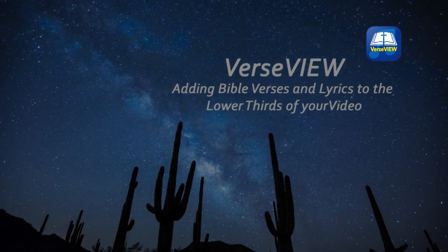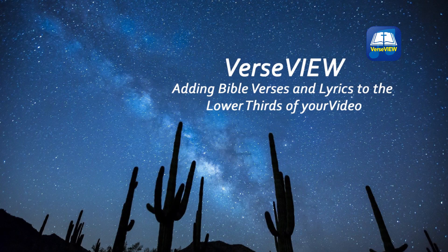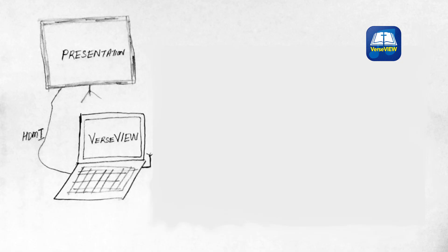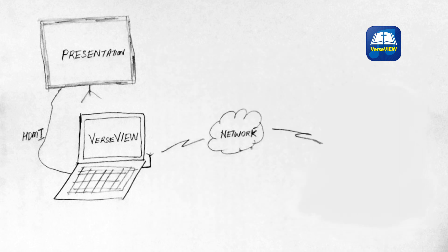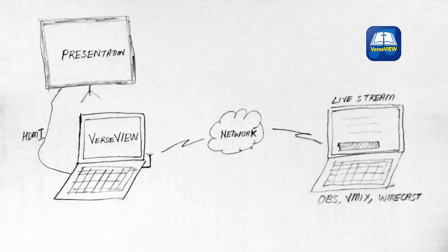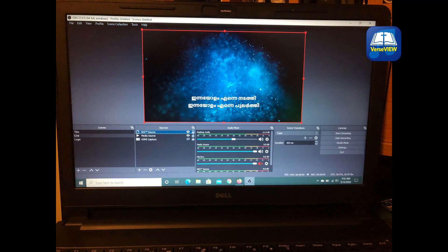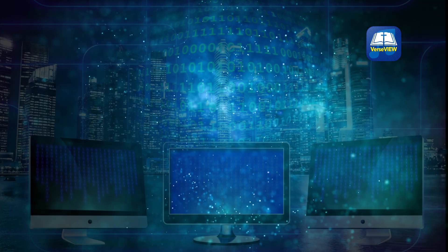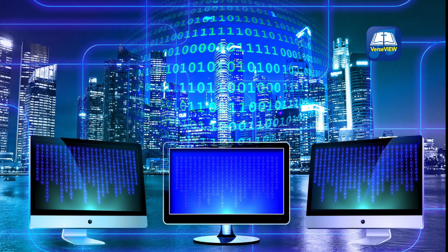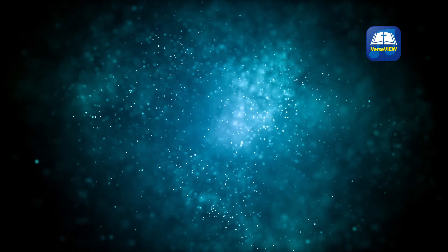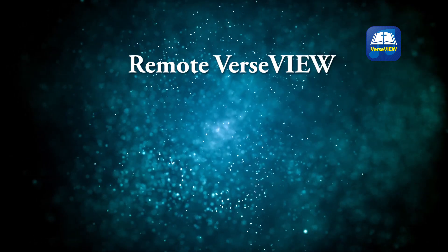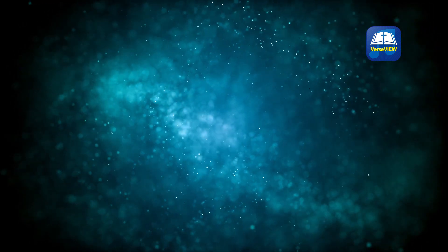The new feature is to access the lower one-third view from VerseView onto your live stream computer over your local network. You can have one computer to do VerseView presentation and another computer to do live stream with your favorite software such as OBS, vMix, or Wirecast. The only requirement is that both computers are on the same network — it is a very simple setup. It uses the VerseView remote feature and provides a web interface to access data from the VerseView PC software.